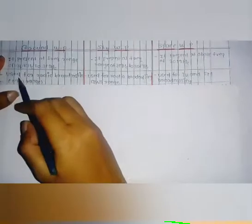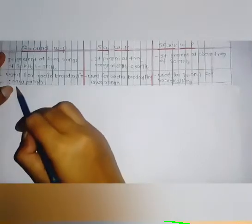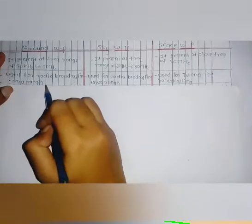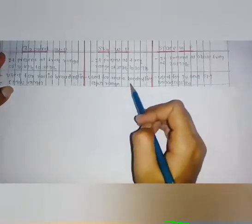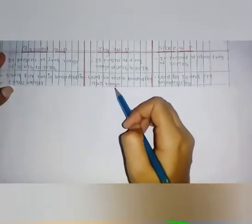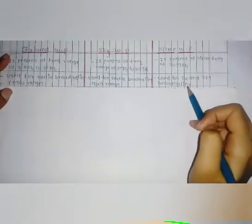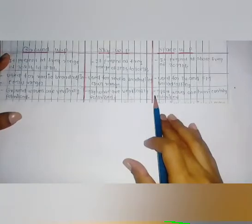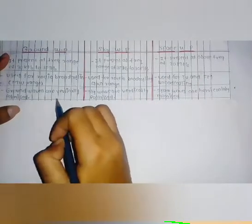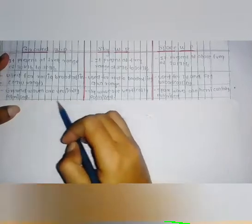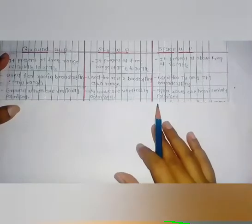The second difference is application: ground wave is used for radio broadcasting in the medium wave (MW) range; sky wave is used for radio broadcasting in the short wave range; and space wave is used for TV and FM broadcasting. Regarding polarization: ground waves and sky waves are vertically polarized, while space waves are horizontally polarized.